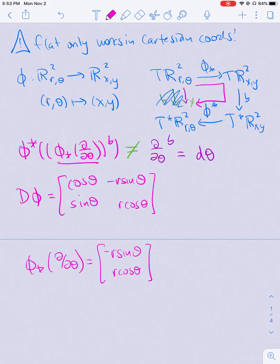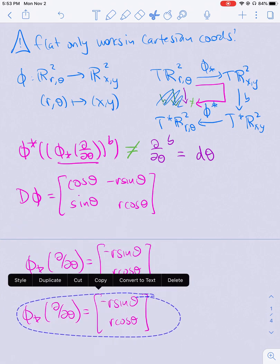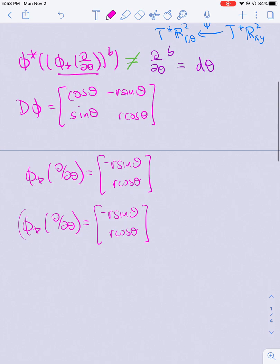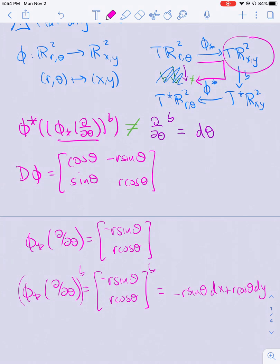Now when I take the flat of this whole thing, I'm going to get the transpose but I can also just write this as -r sin θ dx plus r cos θ dy. Right, now I'm over here.